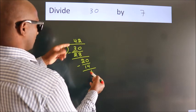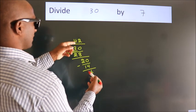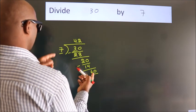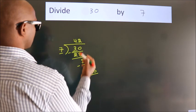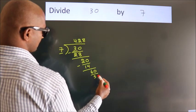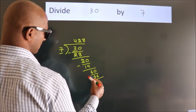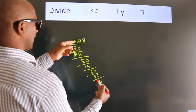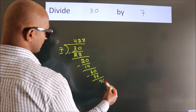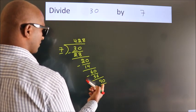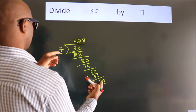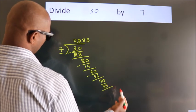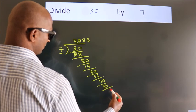After this, we already have the decimal, so directly take 0 — so 60. A number close to 60 in the 7 times table is 7 eights 56. Now we subtract and we get 4. After this, we already have the decimal, so directly take 0 — so 40. A number close to 40 in the 7 times table is 7 fives 35. Now we subtract and we get 5.